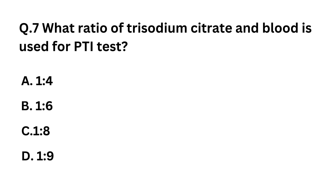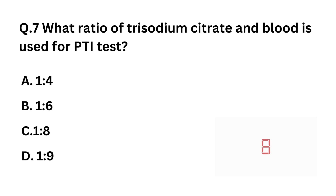Question 7: What ratio of trisodium citrate to blood is used for the PT test? Option A: 1:4. Option B: 1:6. Option C: 1:8. Option D: 1:9. The correct answer is Option D: 1:9.